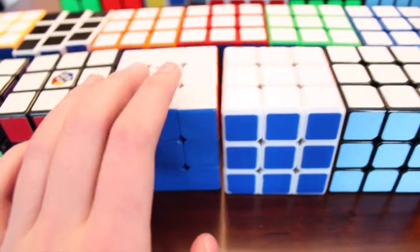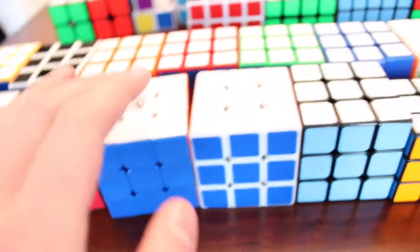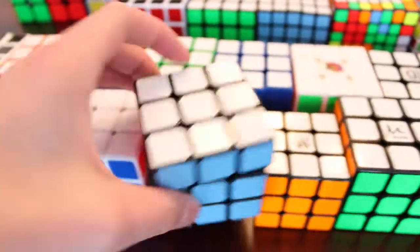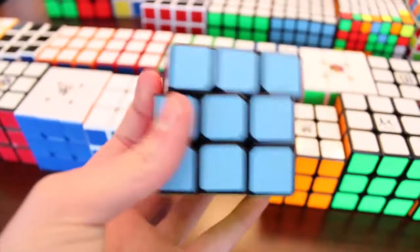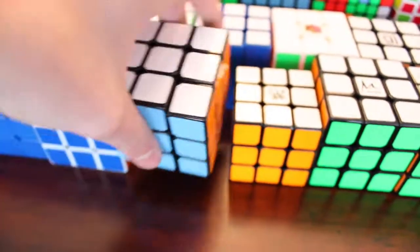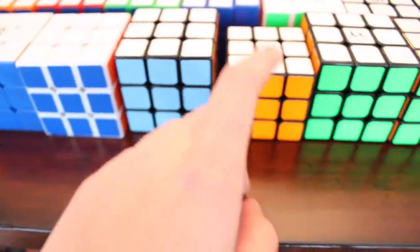Then the first speed cube I actually got was a stickerless Dianchi. So we have it there. And then we have a white one and a black one. This one actually turns really good. So, really good. That was my main for a long time. I'm sure everyone had that as their main at some point.